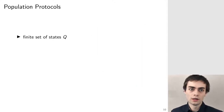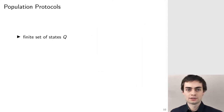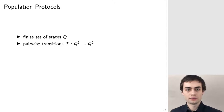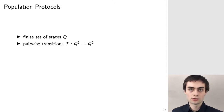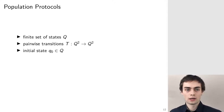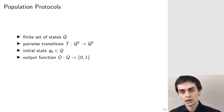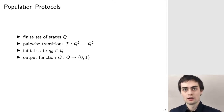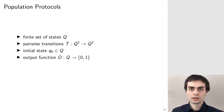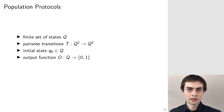Formally, we have some finite set of states Q, a set of pairwise transitions, an initial state, and an output mapping which says for each state whether that state is rejecting or accepting.